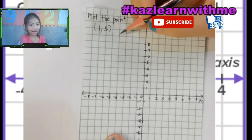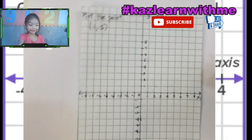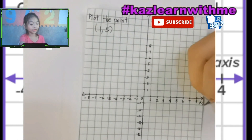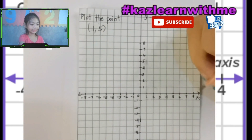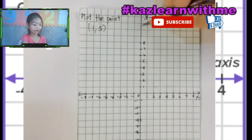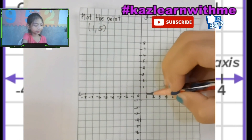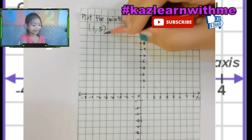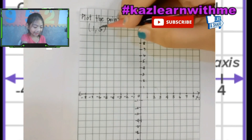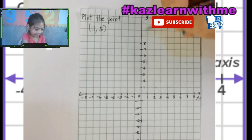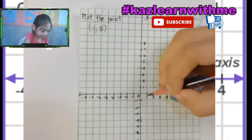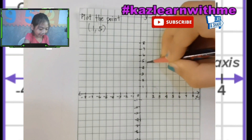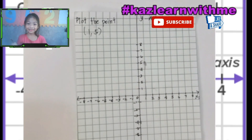We have to plot the point of one and five. The first number is always, always, always at X, and then the five is always at Y. So the first number is one — here — and the next number is five, and it's at Y. So here it is: one, two, three, four, five. We got the point!